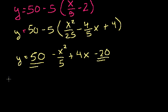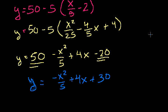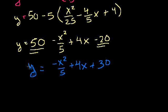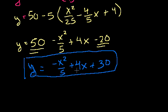We're almost there. We can add the 50 to the negative 20. And we get y is equal to minus x squared over 5 plus 4x plus 30. And we're done. We just simplified this set of parametric equations to this one equation where y is a function of x. And so you might be saying, Sal, why didn't we just always have it this way? This is so much more simple. And we can just graph this. And you know how to deal with it. And it's just one equation with just y and x. We don't have this third variable t.